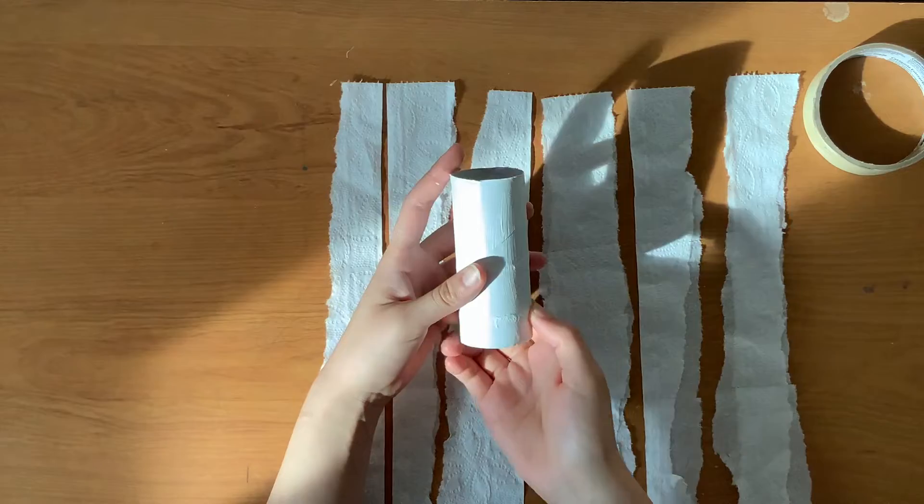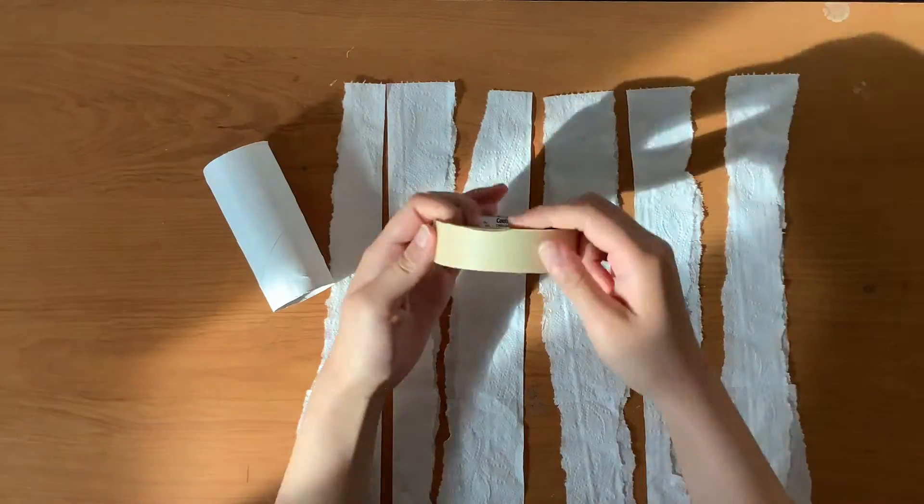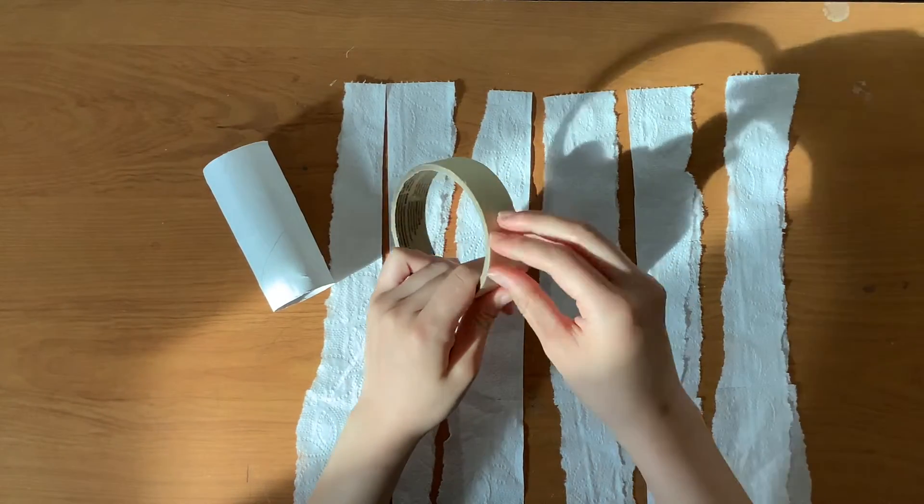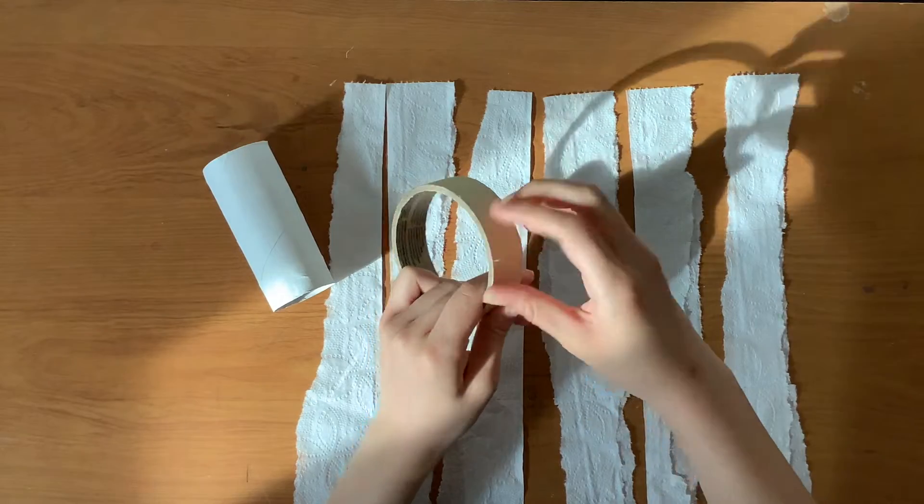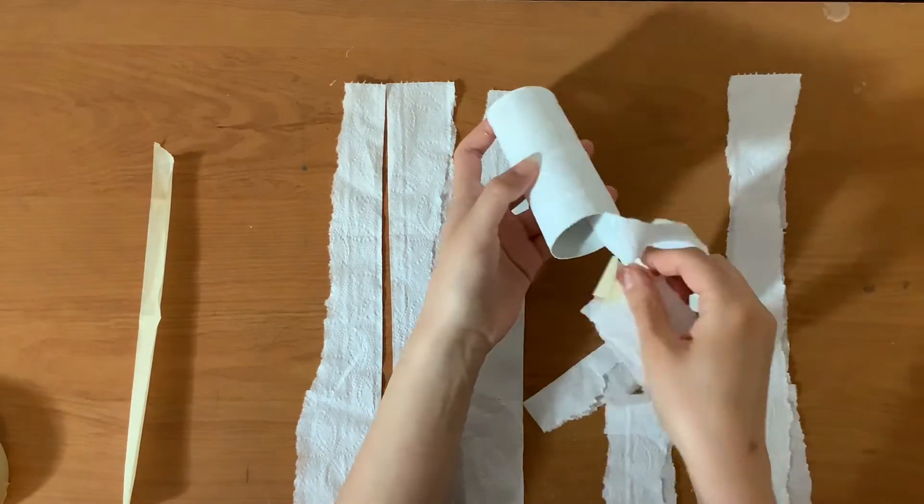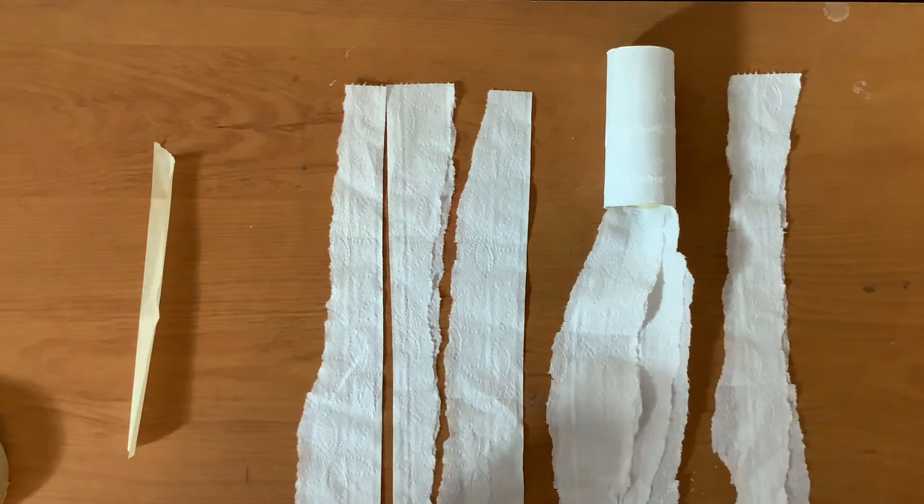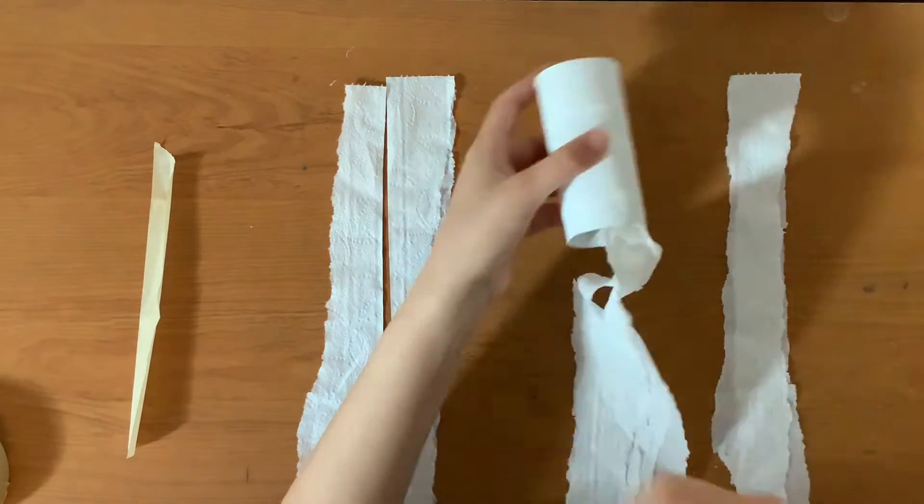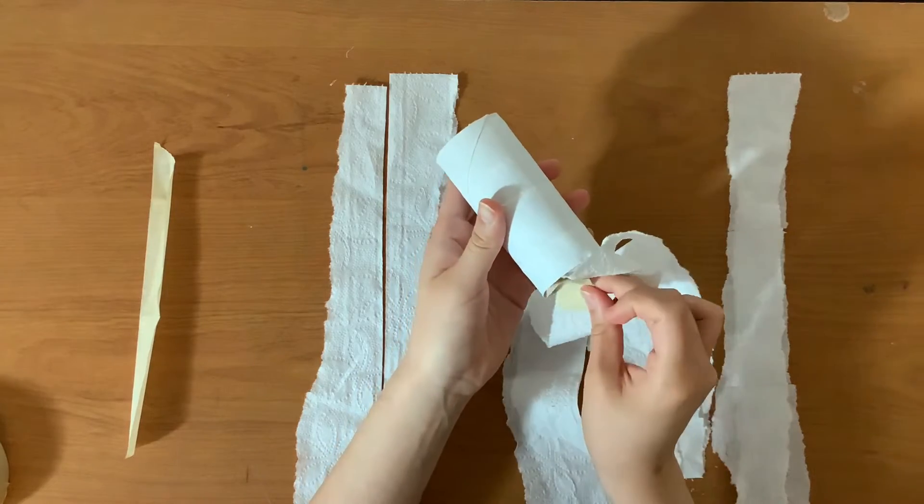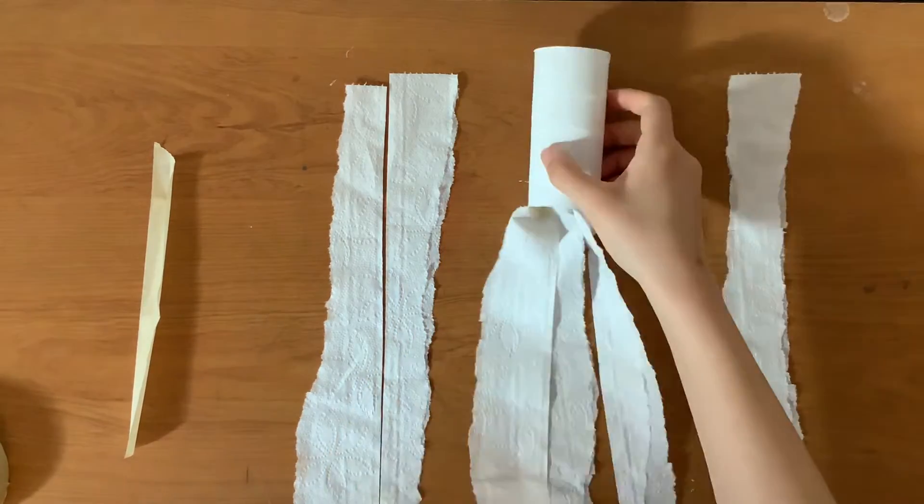Now we will be using our tape to attach these strips of toilet paper to the inside of our now dried toilet paper roll. To do this in the easiest way I find it easier to attach the tape to the strip of toilet paper and then attach the whole thing to the inside of the toilet paper roll.